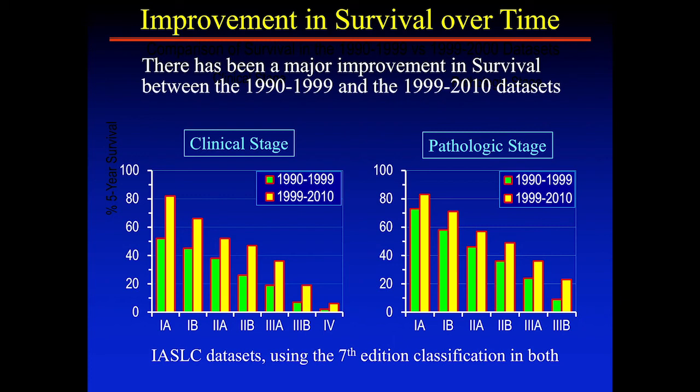Something striking that I really want to study more is the dramatic improvement in survival stage-for-stage and for all patients. Looking at the 1990–1999 database of almost 100,000 patients versus the 1999–2010 database, there's about a 30% improvement in survival stage-for-stage, and it's not just stage shift. We don't really understand exactly why that is.